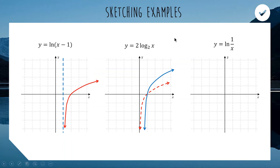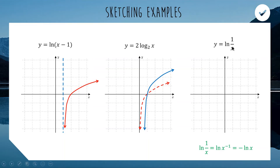The last one, y equals log of 1 over x, is a bit of a trick question. We rewrite 1 over x as x to the power of negative 1, then pull the negative 1 out the front as a power: log of 1 over x equals negative log x. So we take the log x shape and multiply by negative 1, reflecting it across the x-axis — turning it upside down vertically. That is y equals negative log x, which equals log of one over x.